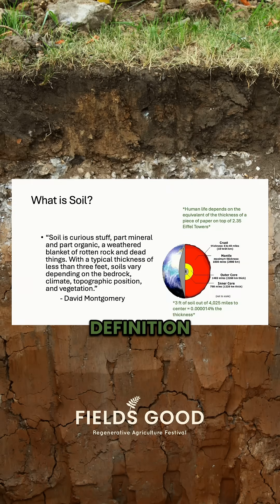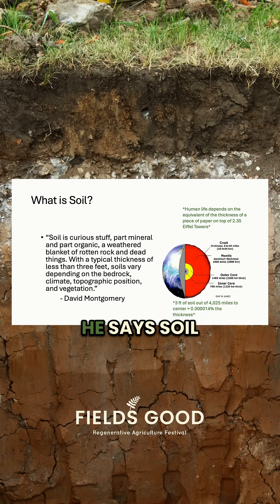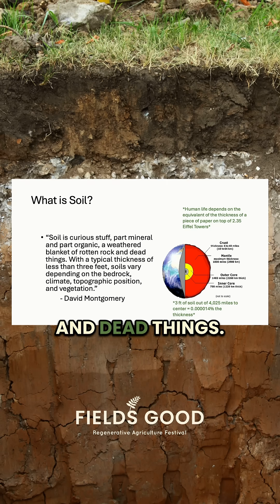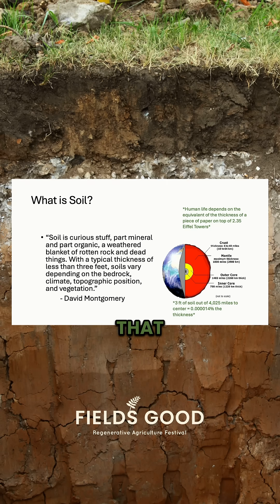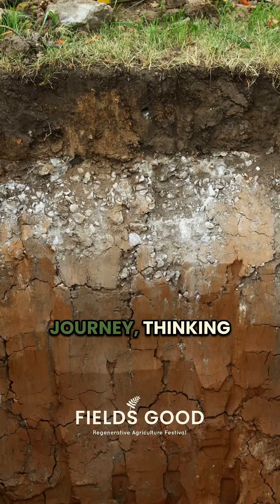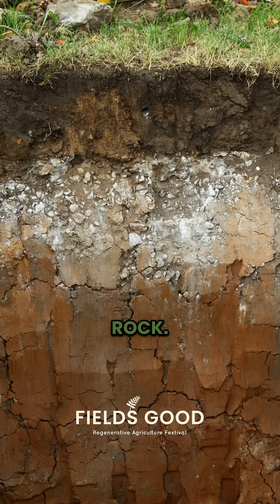So what is soil? My favorite definition is from a book by David Montgomery. He says soil is curious stuff, part mineral and part organic, a weathered blanket of rotten rock and dead things. And I don't know why, but when I was in university, that idea of soil being rotten rock and dead things just set me off on this journey, thinking sand, silts, and clay are just some form of degraded rock. It was amazing to me.